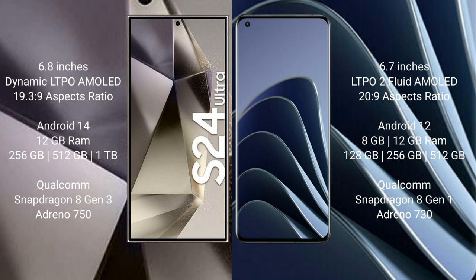Samsung Galaxy S24 Ultra runs on the Android 14 operating system. OnePlus 10 Pro runs on the Android 12 operating system.